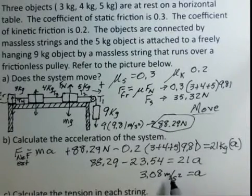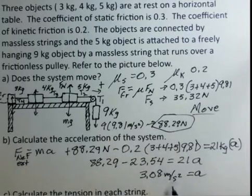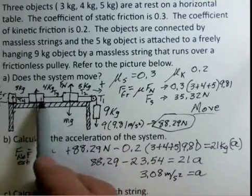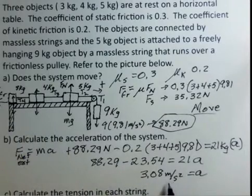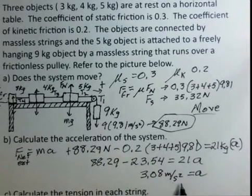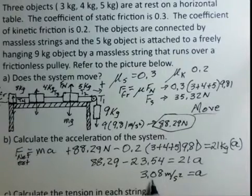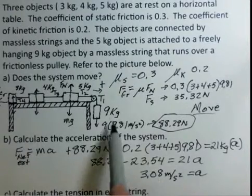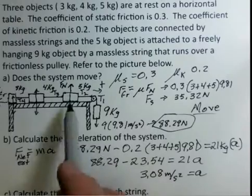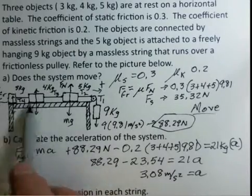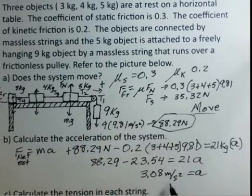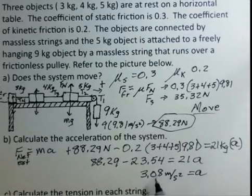Using standard metric units — newtons, kilograms, meters per second squared — the three objects on the table accelerate to the right at 3.08 m/s², and the 9 kilogram object accelerates downward at 3.08 m/s². It doesn't fall at 9.81 m/s² because it has dead weight to pull across the table, so it falls slower than free fall. This number is reasonable.